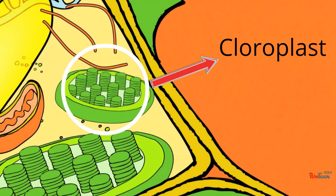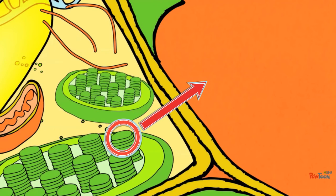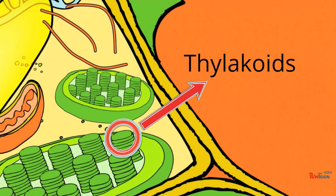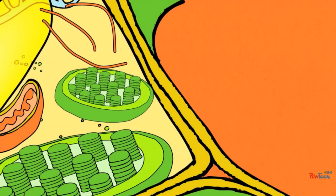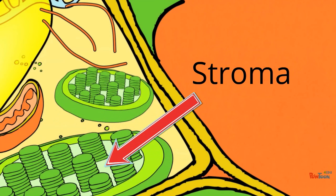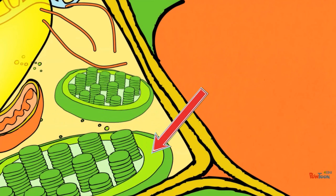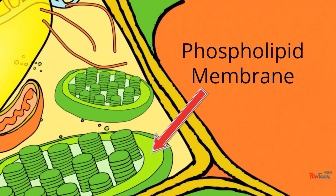First is the organelle itself, the chloroplast. In the chloroplast are thylakoids — these are disc-shaped sacs that hold lumen. Next are the grana, which are stacks of thylakoids that are generally cylindrical. The stroma is the fluid that surrounds all of this. The phospholipid membrane is the membrane that covers the chloroplast.